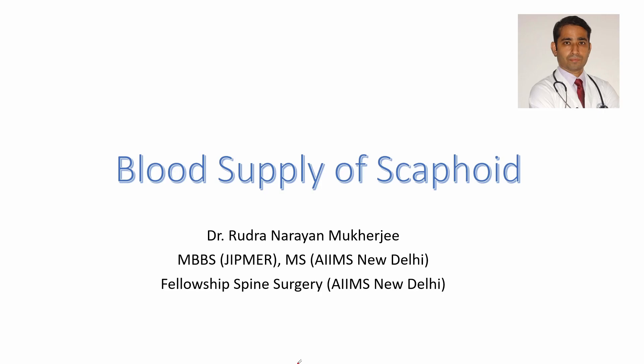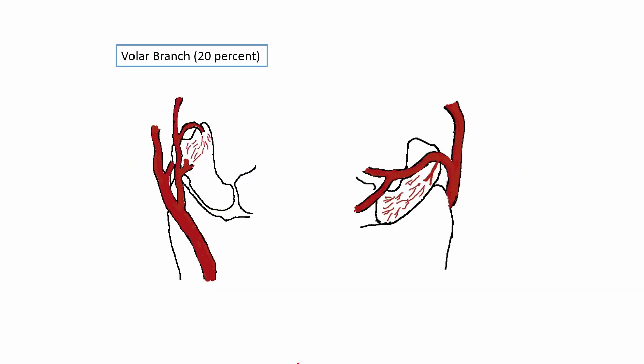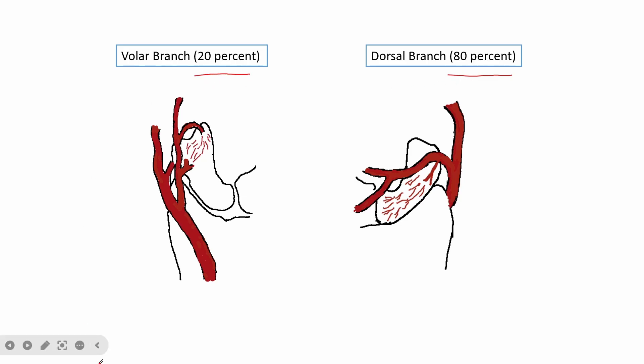Blood supply of scaphoid. The scaphoid receives its blood supply from branches of the radial artery. The scaphoid has a volar branch and a dorsal branch. The dorsal branch is responsible for 80% of the scaphoid blood supply, whereas the volar branch supplies the remaining 20%.